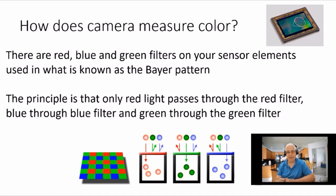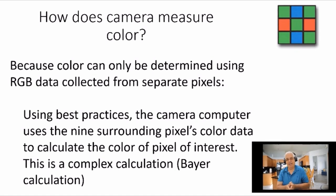So knowing how much red, how much green, and how much blue, we can calculate a color. The challenge with this is that these photosites, unlike film where the color chemistry was stacked, these photosites with the different filters are not exactly on top of each other. So best practices, the camera uses a square of nine photosites to calculate the intensity and the color of each site, and then increments to the next one and increments to the next one.